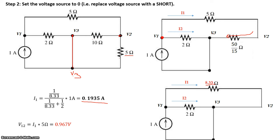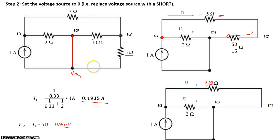Let me re-draw that picture. I1 equals 0.1935 amps, and it's going through the 5 ohm resistor. So the voltage across this 5 ohm resistor is I1 times 5 ohms, which gives 0.967 volts. We've now figured out the voltage across the 5 ohm resistor when the voltage source is removed — that is, the contribution from the 1 amp current source.